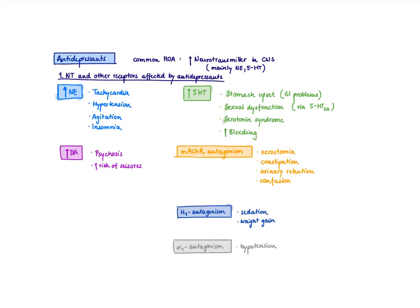If you block muscarinic acetylcholine receptors, you're going to have anticholinergic side effects: dry mouth, xerostomia, constipation, urinary retention, and confusion. If you block the H1 receptor, that leads to sedation and weight gain. And if you block the alpha-1 receptor, you can have orthostatic hypotension.